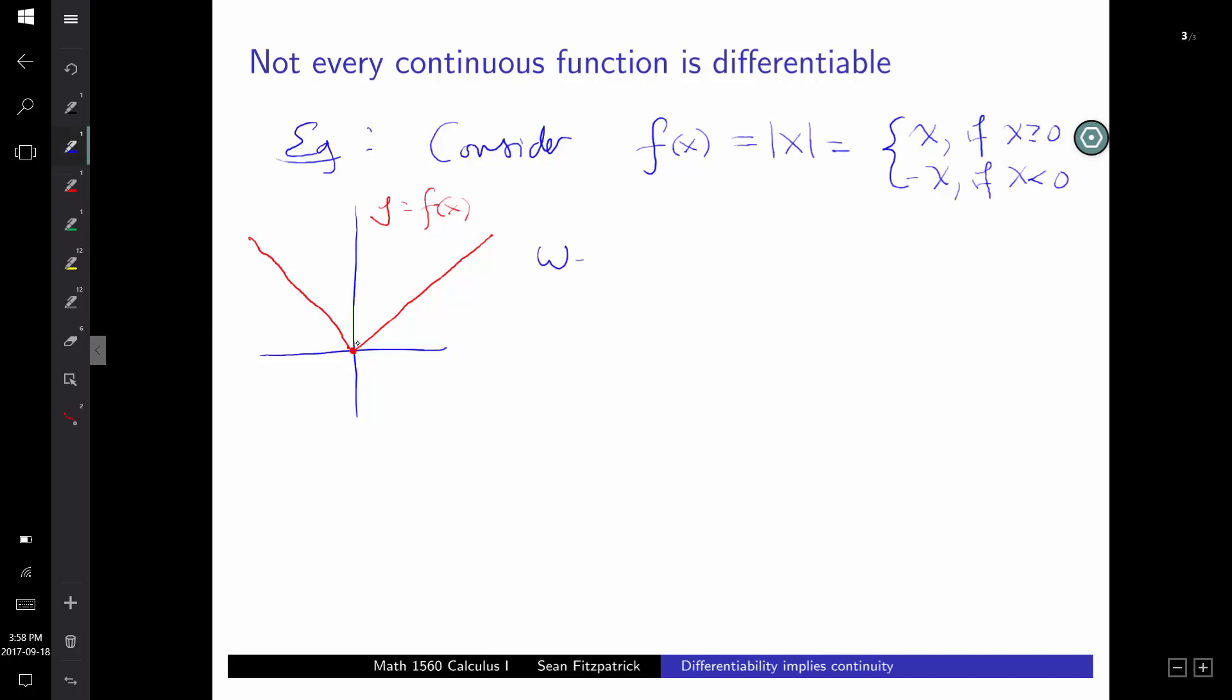The only place where you could possibly have trouble is 0. And you can check that the left and right hand limits are both equal to 0 at 0. So the limit exists and is equal to 0. And f of 0 is 0. So we know that the limit as x goes to 0 of absolute value of x is equal to 0, which is also the absolute value of 0. So that means that f is continuous at x equals 0.